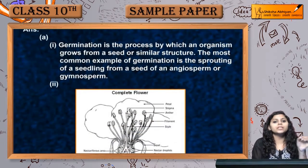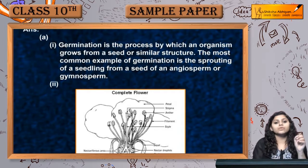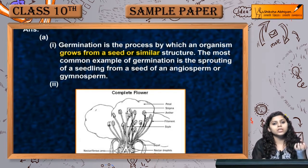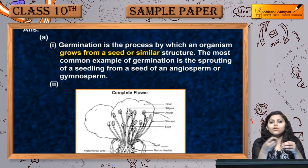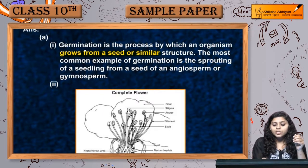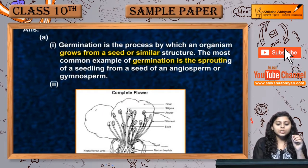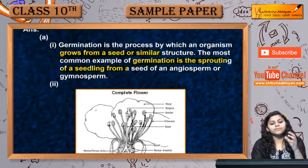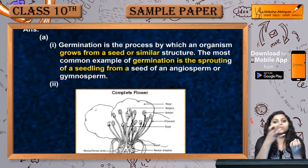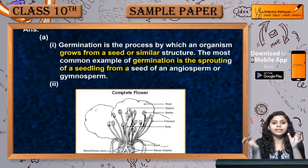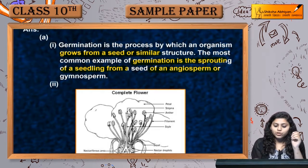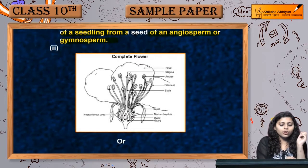Coming to germination — germination wo process hai by which an organism grows from a seed or similar structure. For example, germination is the sprouting of a seedling from a seed. Ab seeds se jo sprouts produce hote hain, that is also germination of an angiosperm or gymnosperm.